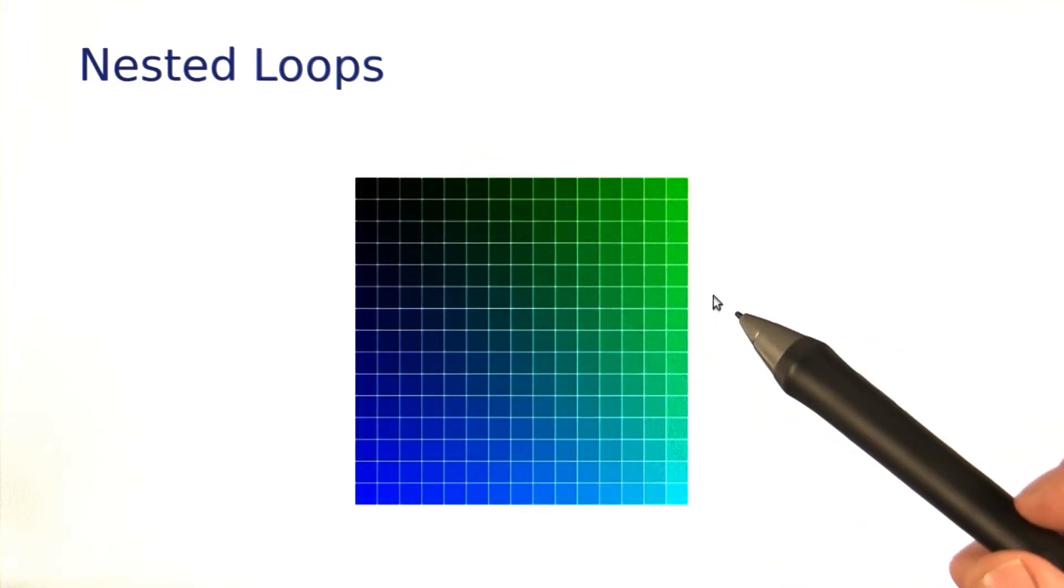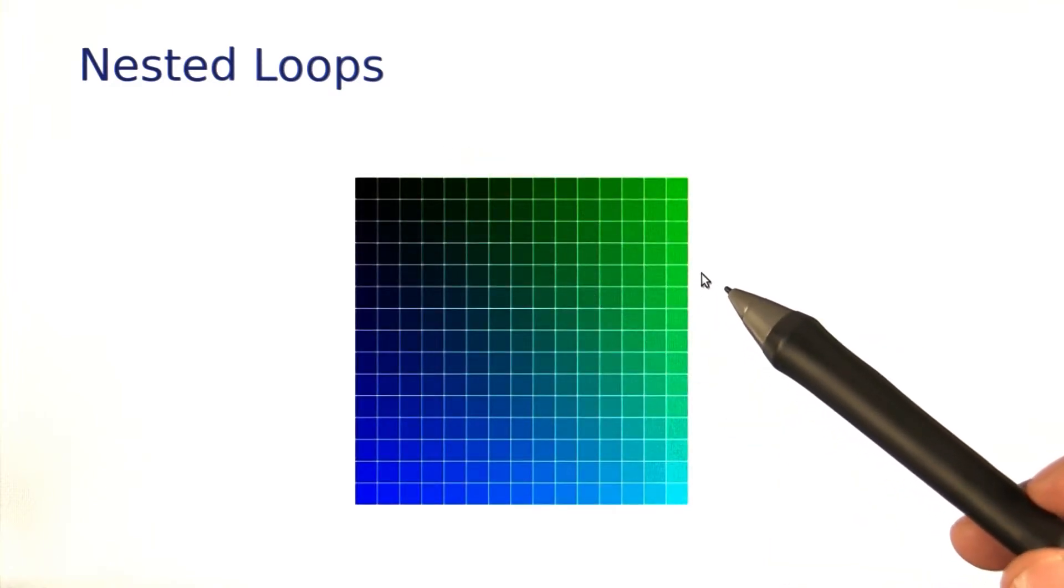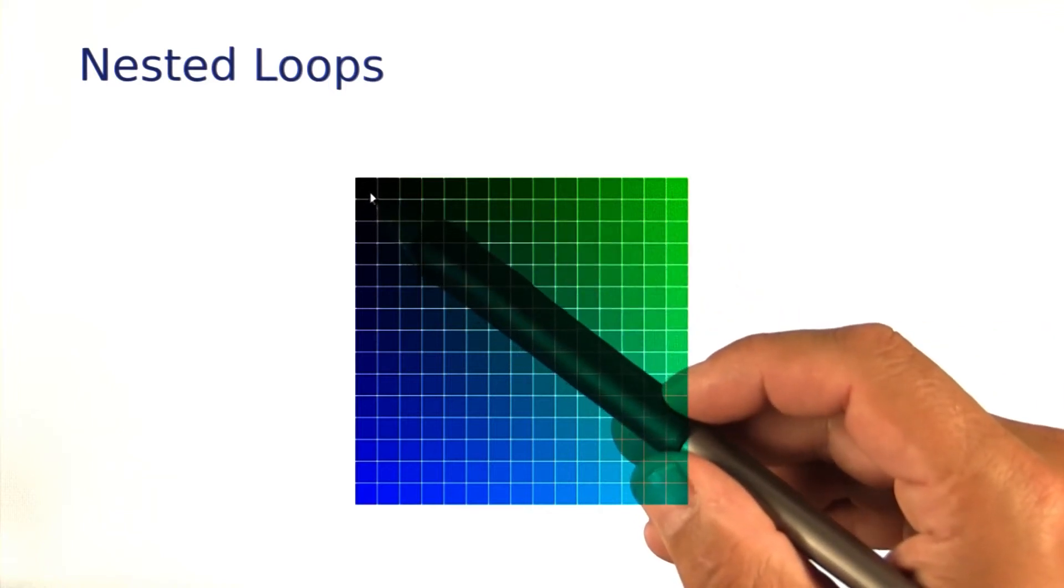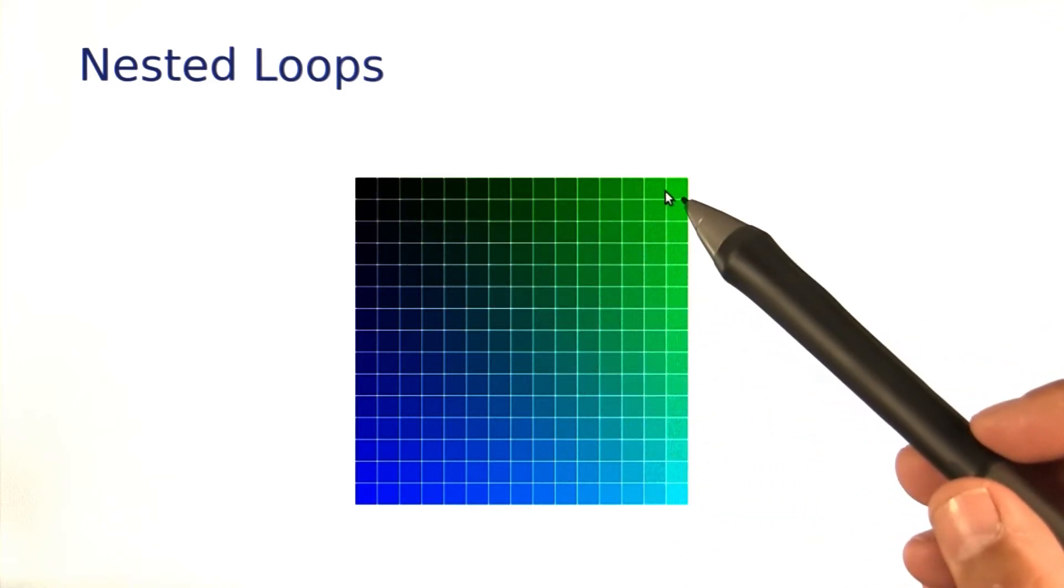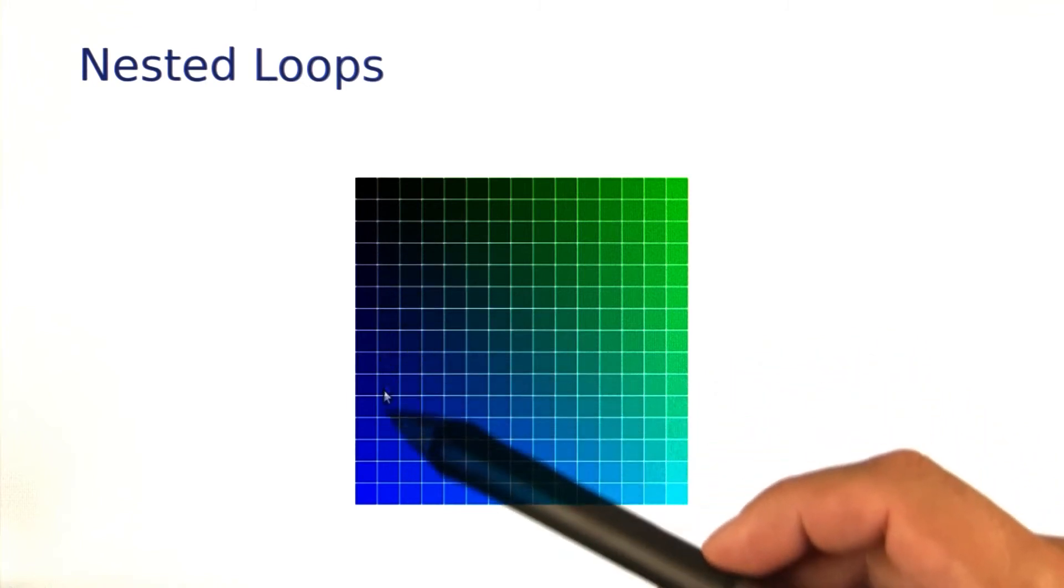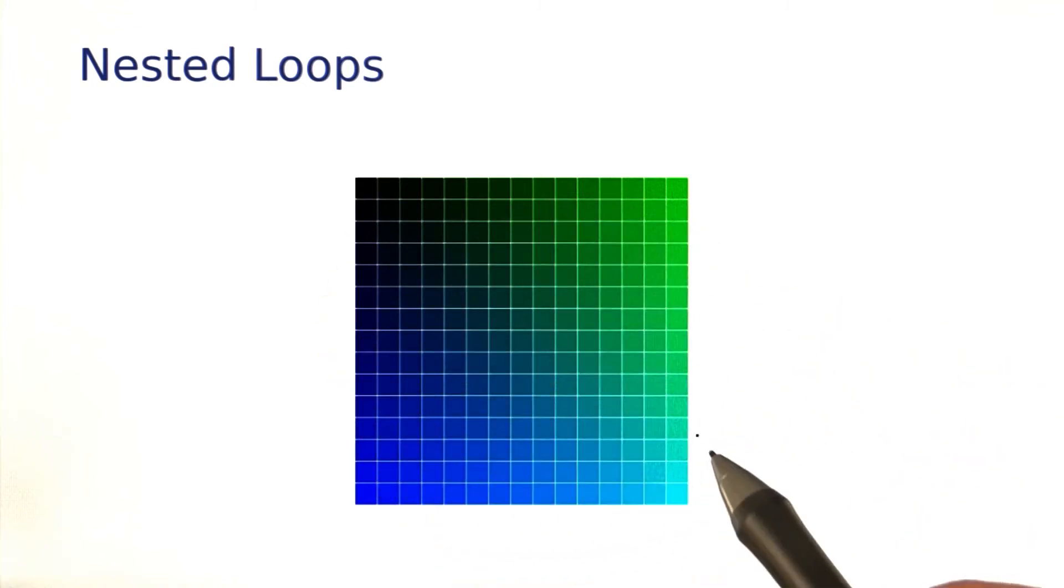Let me give you an example. We want to write a program that draws this square of colors, starting with a black one, increasing the greenness in this direction, increasing the blueness in that direction. How can we draw all of these squares?